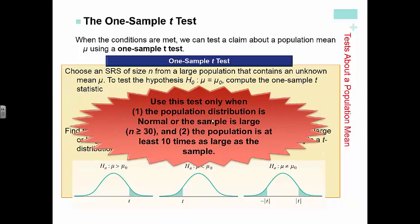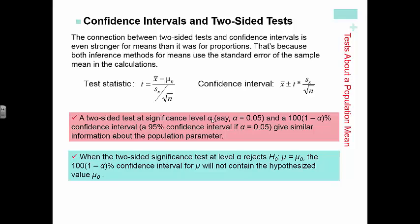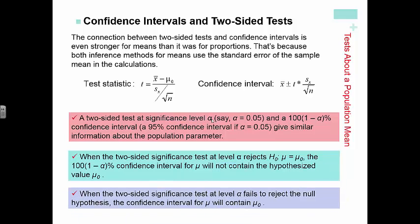Remember this only works if your conditions are satisfied — you have to have a random sample, it has to be approximately normal, and you want to check for independence. Just like before, if we have a two-sided test about population means, it correlates back to our confidence intervals. If we reject our null hypothesis, it will not be included in our confidence interval. But if we fail to reject, it will be included in that confidence interval. So if we rejected the null and it's not included in our confidence interval, the confidence interval will say it's not included but also show where the true value should be. You want to use the two together to get a better picture of what's going on.